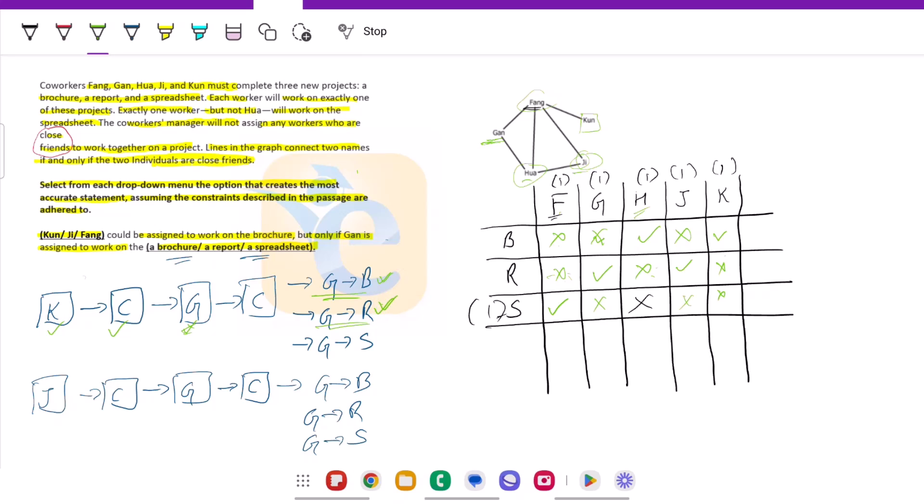Thus this cannot be the answer. K cannot be the answer for this question. Now let us move to the next step. As we have decided in our strategy, how we'll be going about this.